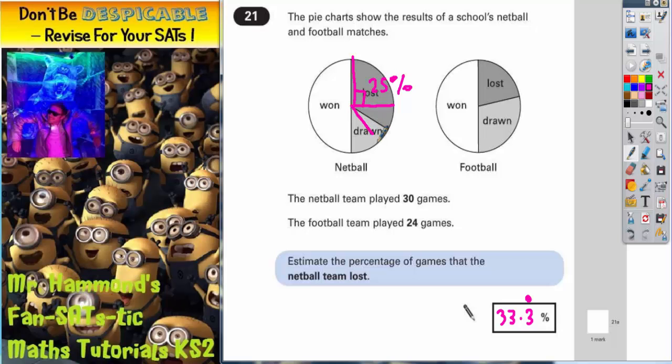If you split this quarter here in half again, well a quarter split in half, 25% split in half is 12.5%. So this here would have to be 12.5%. If you put the two together, 25 plus 12 is 37.5%. Now you can see that it's got to be less than 37.5% because the loss section that's in dark grey is less than those two bits together.